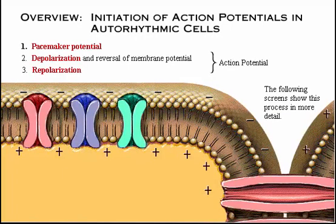Here's an overview of the initiation of action potentials in an auto-rhythmic cell. An auto-rhythmic cell has the unique ability to depolarize spontaneously, resulting in a pacemaker potential. Once threshold is reached, an action potential is initiated, which begins with further depolarization and leads to reversal of the membrane potential. Then repolarization occurs, returning the cell to its resting membrane potential. The cell spontaneously begins to slowly depolarize once again, and the sequence is repeated.